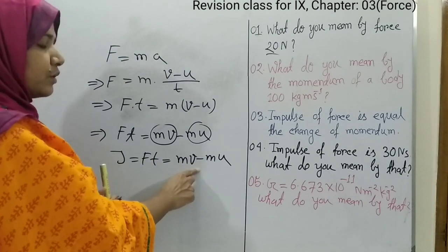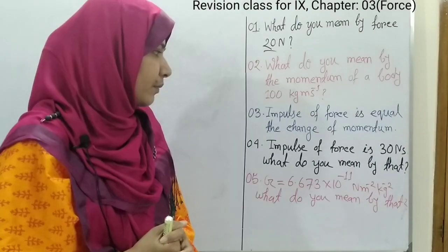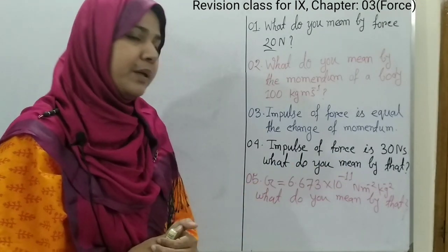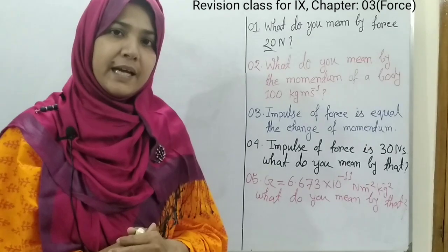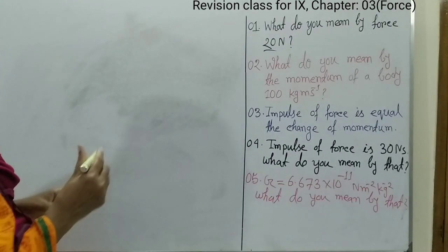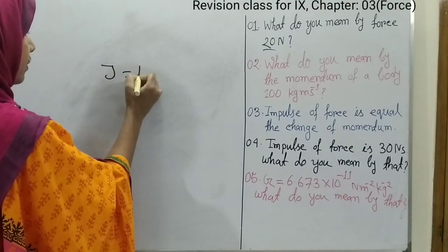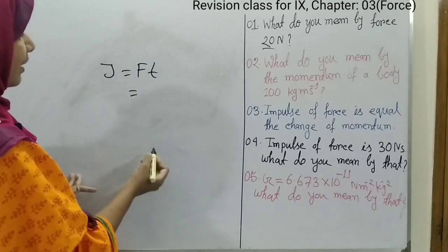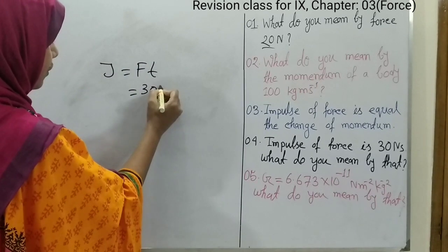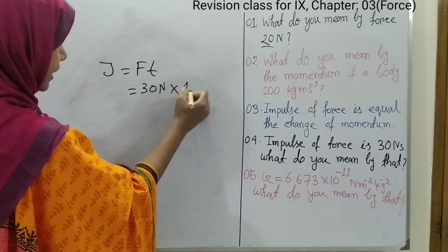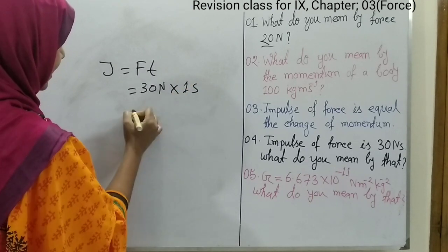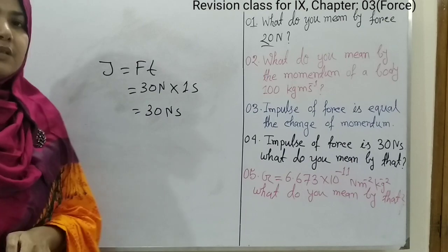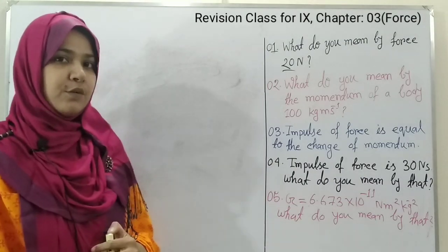So we can say that impulse of force equals change of momentum. Now, what do you mean by impulse of force 30 Newton second? Impulse of force equals change of momentum, J equals FT — that means a 30 Newton force is applied on an object for 1 second, giving an impulse of force of 30 Newton second.